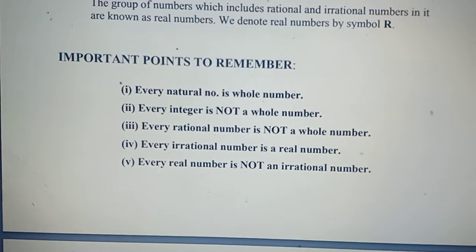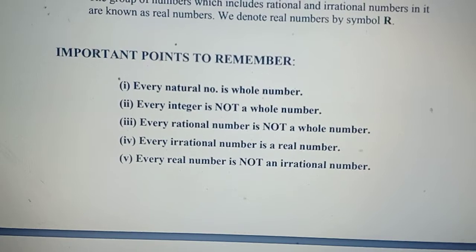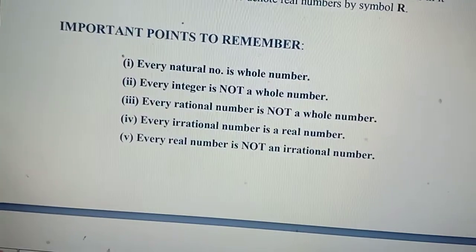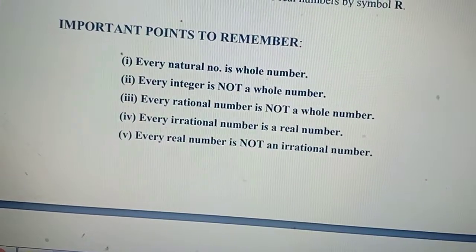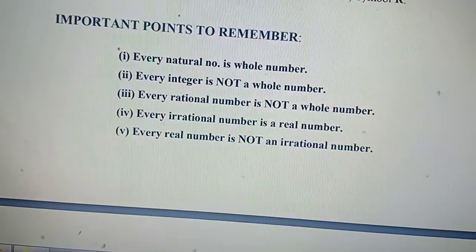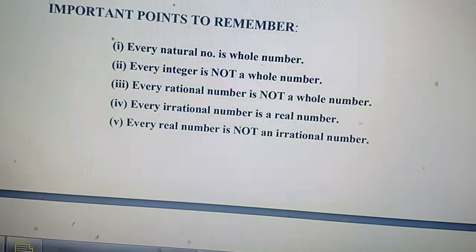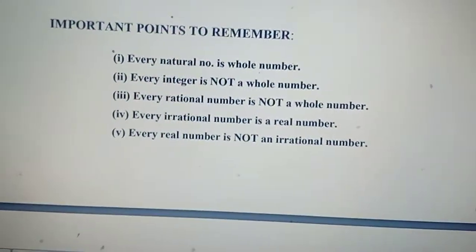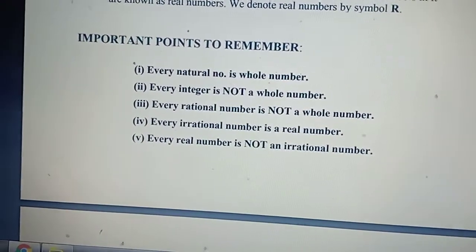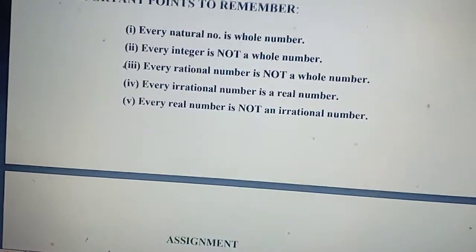Third, every rational number is not a whole number — for example, 1/2 is a rational number but it is not a whole number. Fourth, every irrational number is a real number. Fifth, every real number is not an irrational number — for example, 1 is a rational number and also a real number, but it is not an irrational number.